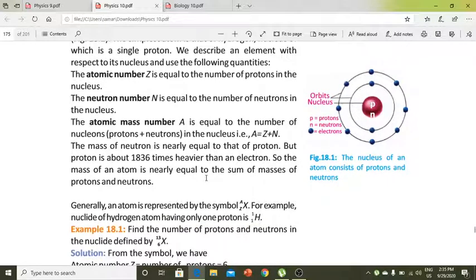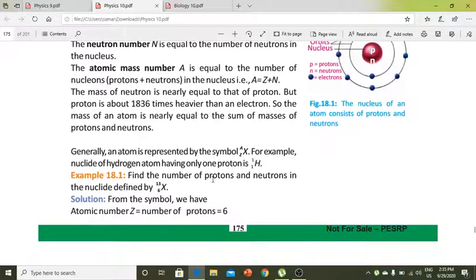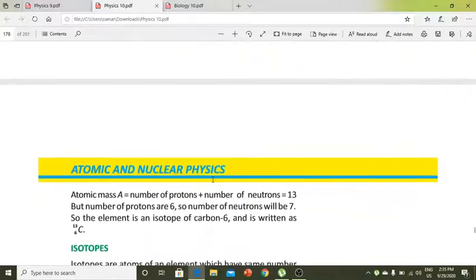The mass of neutrons is nearly equal to that of protons. But the proton is about 1836 times heavier than an electron. So the mass of atoms is nearly equal to the sum of masses of protons and neutrons.